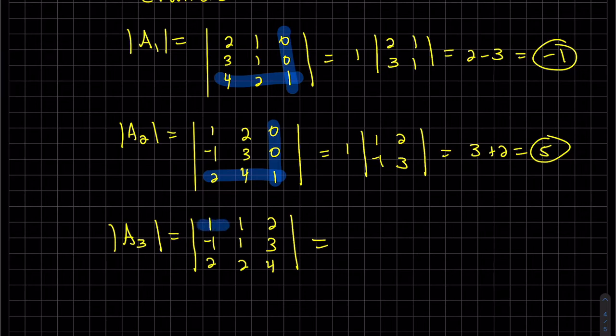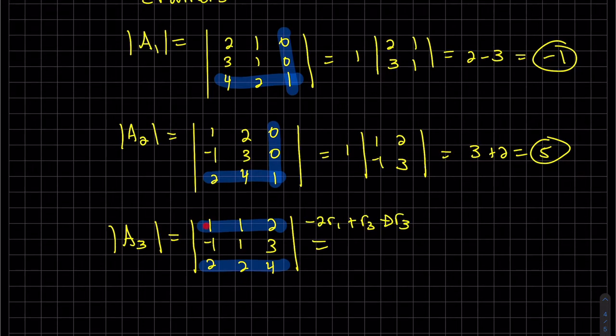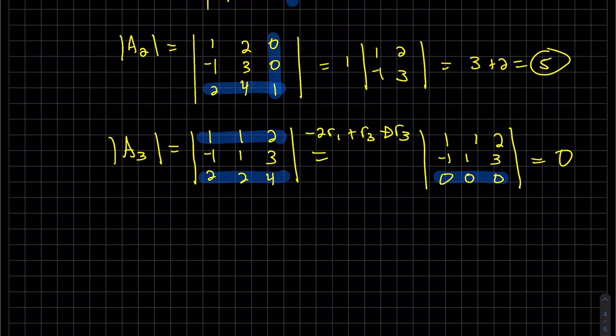Now if you notice, these are multiples of each other. What happens when you have multiples of each other? You should know immediately that you can make a row of 0s, so the determinant is 0. I'll do the work now, though. So if I take minus 2 row 1 plus row 3, we get 0 using this as my expansion. So C1.